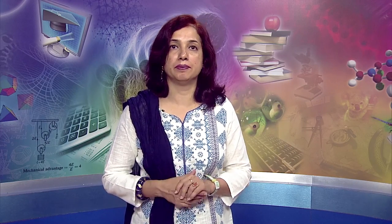We will be covering all these one by one. First, we start with keywords. Keywords are the reserved words in C++ which have a predefined meaning. These words are already known to the compiler and are known to have a particular meaning. When these words are used, the compiler is expected to perform a particular job. For example, int signifies an integer, float signifies a decimal number, char signifies a character. So all these are keywords. I cannot use these keywords for any other purpose whatsoever.